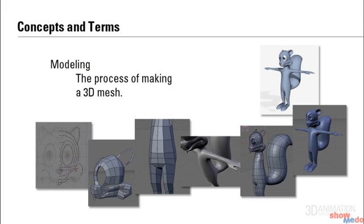The first word is modeling. This is the process of making a 3D mesh — nothing more and nothing less than that. It's just the 3D form. A modeler's primary job is going to be creating a flat, gray-shaded-looking mesh. So it's going to be like someone who works with clay. They don't paint the clay; they just manipulate the clay to make a 3D form.